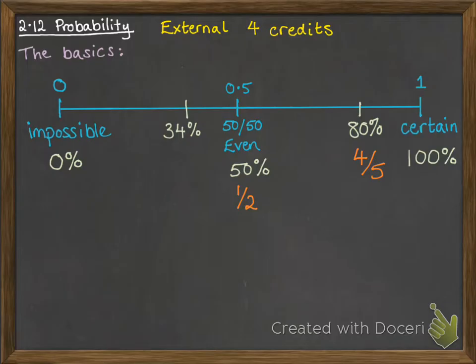The 80% would be 8 out of 10, that can also cancel down to 4 out of 5. The 34% would be 34 out of 100.